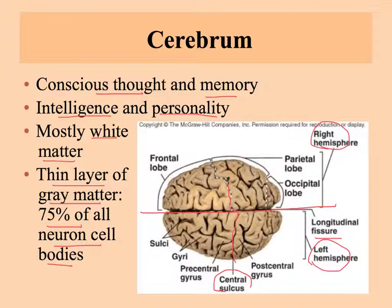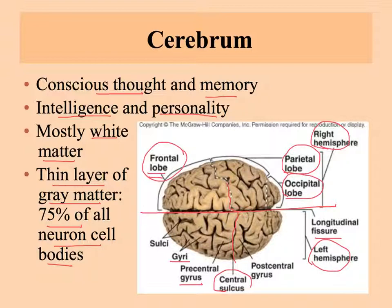The lobes of the brain are named for the bones they are underneath: the frontal lobe is under the frontal bone, the parietal lobe under the parietal bone, and there is also a temporal lobe and the occipital lobe. Since the brain is divided into hemispheres, there is a right and left frontal lobe, a right and left parietal lobe, and so on — in many cases we have duplicates from one side to the other.